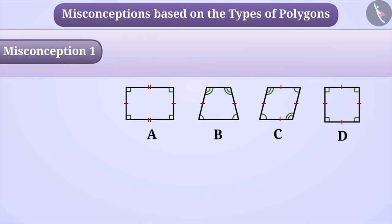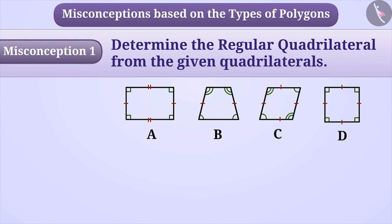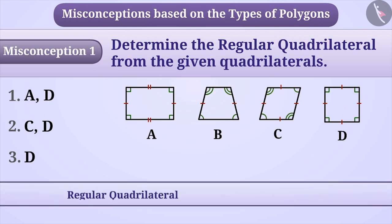Misconception 1. From the given quadrilaterals, find which ones are regular quadrilateral. Many times children have the misconception that regular quadrilaterals are those quadrilaterals whose all the angles are right angles, such as a square and a rectangle.